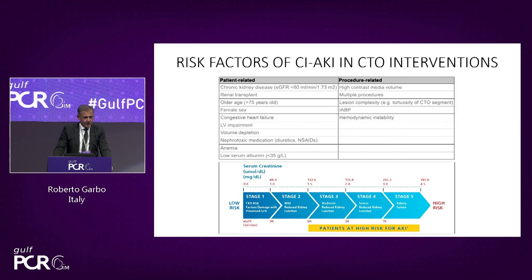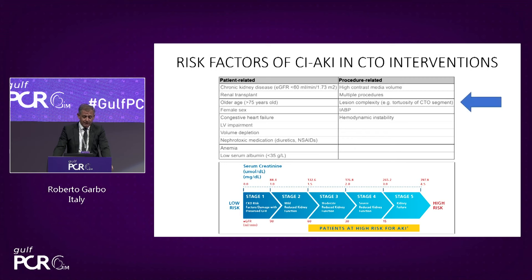Risk factors associated with CTO intervention are patient-related and procedure-related. Patient-related factors include previous chronic kidney disease, older age, female sex, congestive heart failure, left ventricular impairment, nephrotoxic medication, and anemia. Procedure-related factors include high contrast media volume and lesion complexity. Both contrast and CTO complexity together increase the risk of contrast-induced kidney injury.